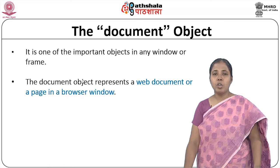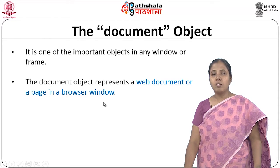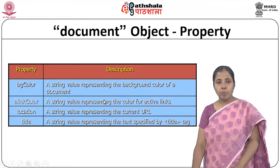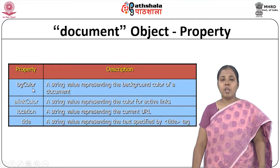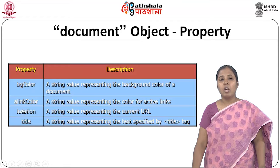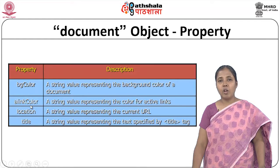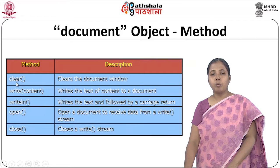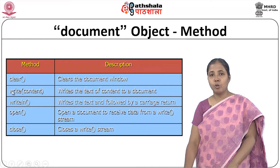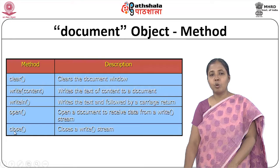The document object represents the web page in the browser window and is the important object in any window or frame. Properties include: bgColor (background color), linkColor (color of active links), location (current URL), and title (text in the title tag). Methods include: clear (clears the document window), write (writes text to a document), writeln (writes text followed by a carriage return), open (opens a document to receive data from a write stream), and close (closes a write stream).